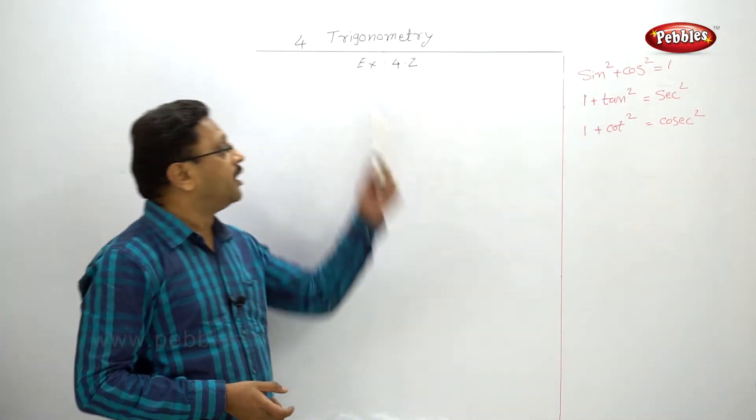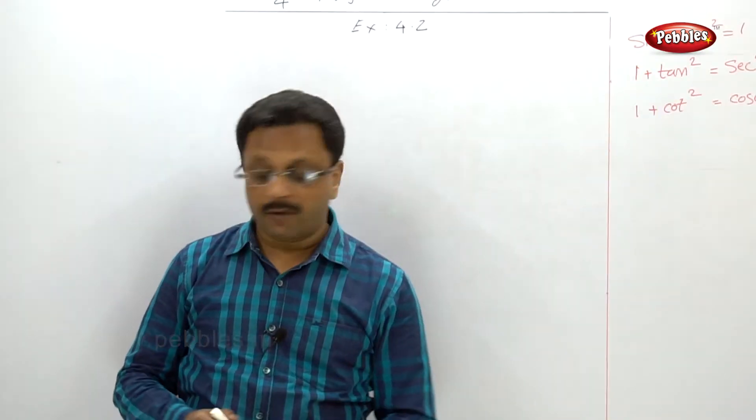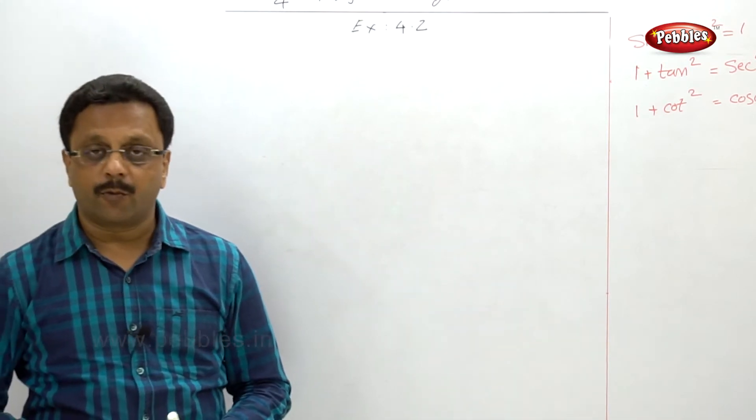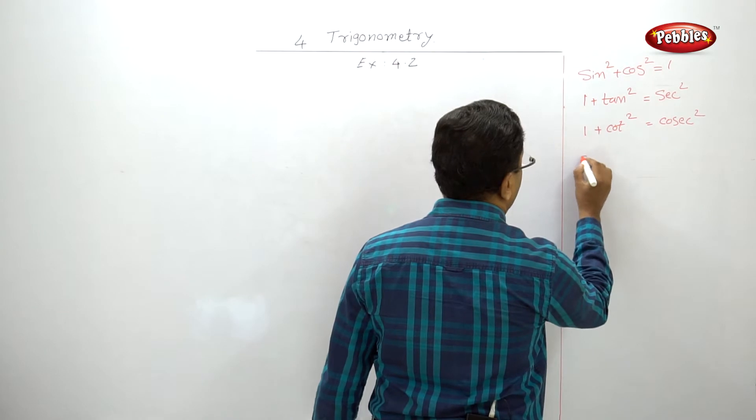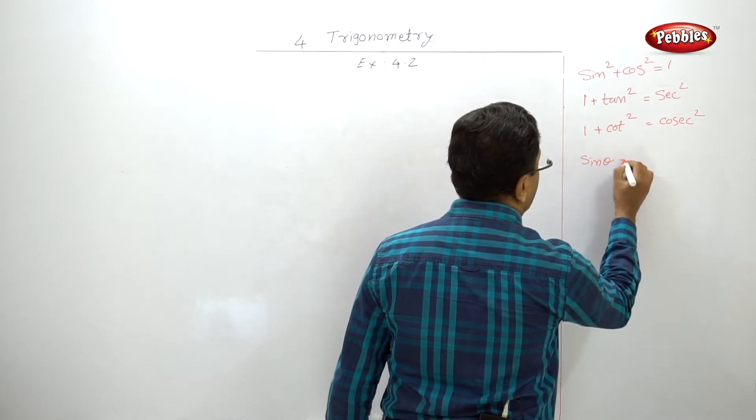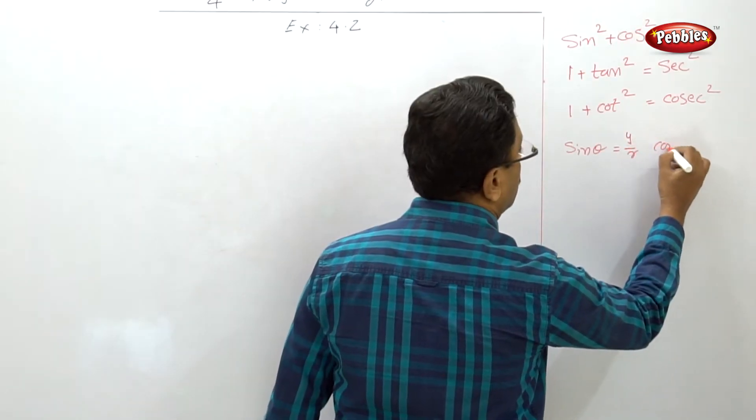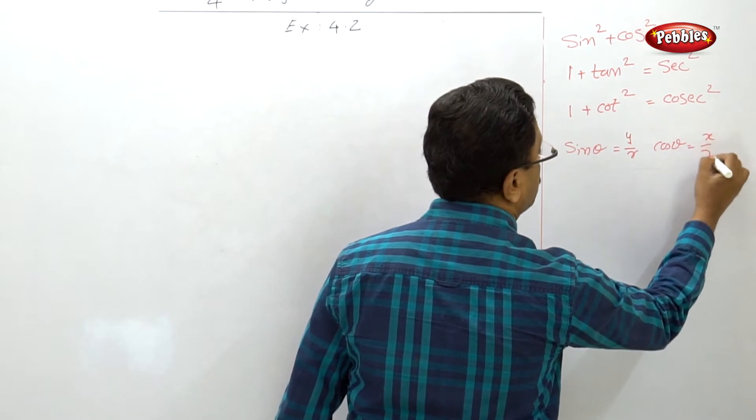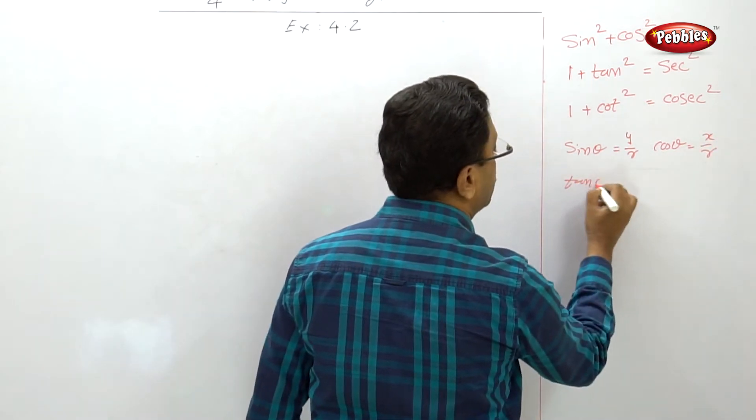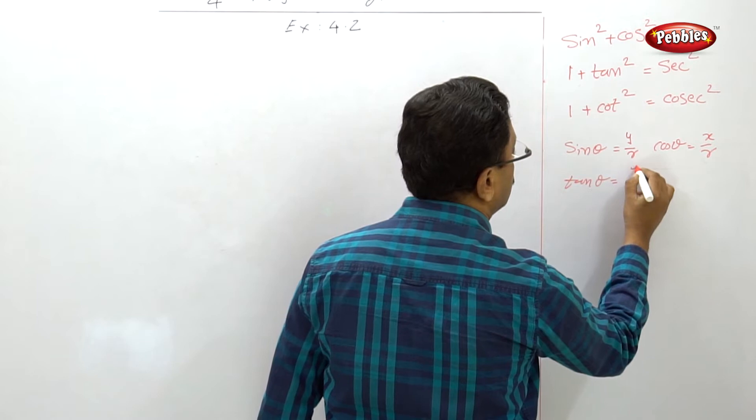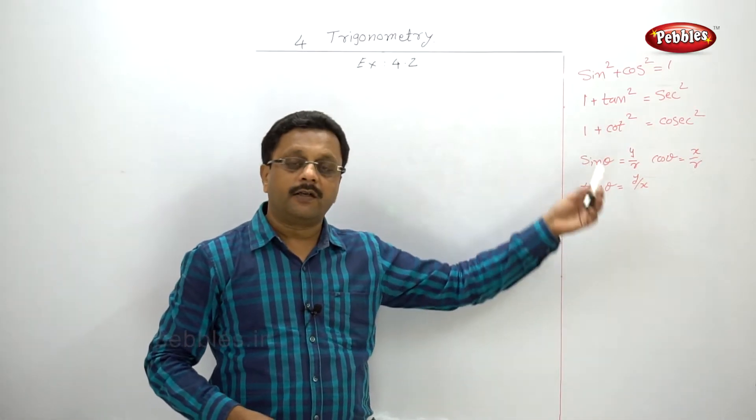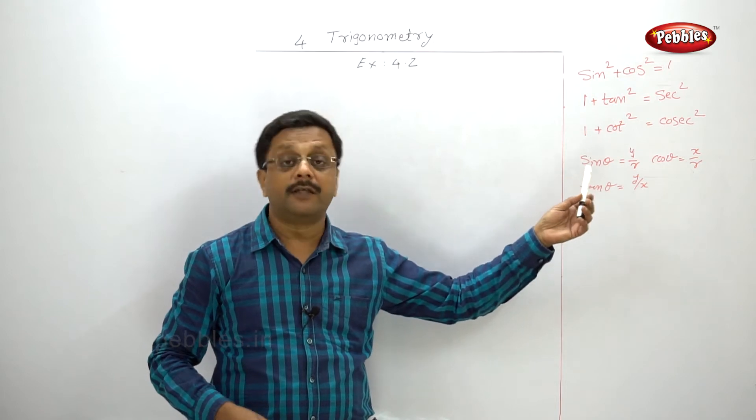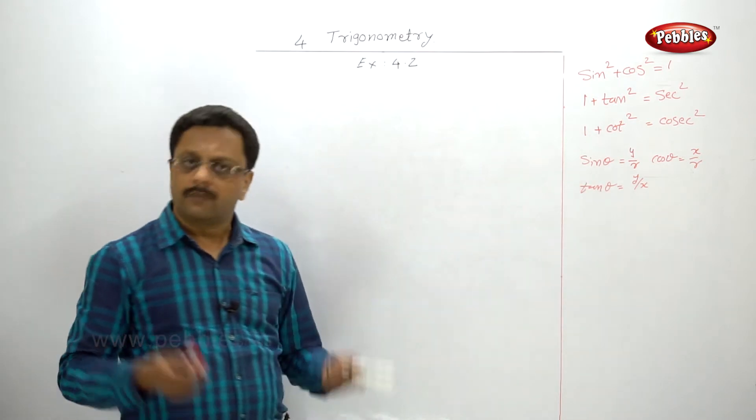Welcome back. Let us solve Exercise 4.2. Before solving Exercise 4.2, let us write down what we got: sin θ = y/r, cos θ = x/r, and tan θ = y/x. This we have already seen while learning the topic.